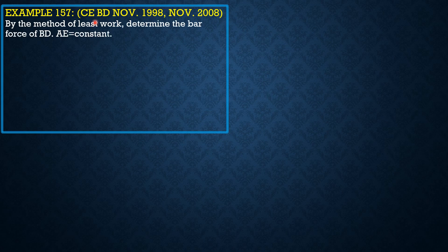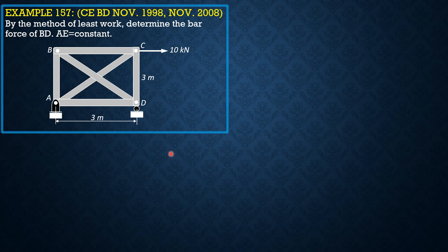This problem was solved already by the force method. It came out in the Civil Engineering board exam in November 1998, and again in 2008. By the method of least work, determine the bar force of BD where AE is constant. This is our only redundant force — the structure is determinate to the first degree — so we select BD as our redundant force and call it P.